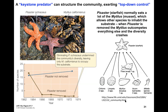Keystone predators can structure the community by exerting top-down control. In a famous experiment done in the late 1960s, the idea is that in this community we have Pisaster, a starfish, that essentially eats a lot of mussels, which allows other species to inhabit the substrate. When the starfish is removed, the mussel outcompetes everything else and species diversity crashes.